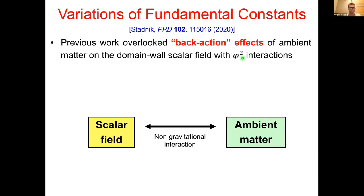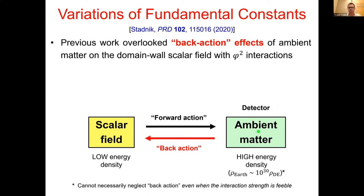If we have a non-gravitational interaction between a scalar field and an ambient matter field, by definition any non-gravitational interaction is bidirectional in nature. Normally we are interested in the forward effect of the scalar field onto the ambient matter field, which makes up the detector in our experiments. However, since the interaction is bidirectional, there is in principle always this back-action effect of ambient matter onto the scalar field.